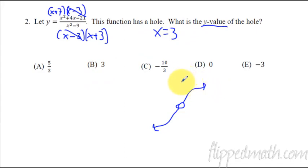A y value of the hole is basically you take the simplified version of the function. So in this case it's going to be (x plus 7) over (x plus 3). You just take the simplified version and you plug the 3 into the simplified function. So what's that going to be? 3 plus 7 is going to be 10. 3 plus 3 is going to be 6.